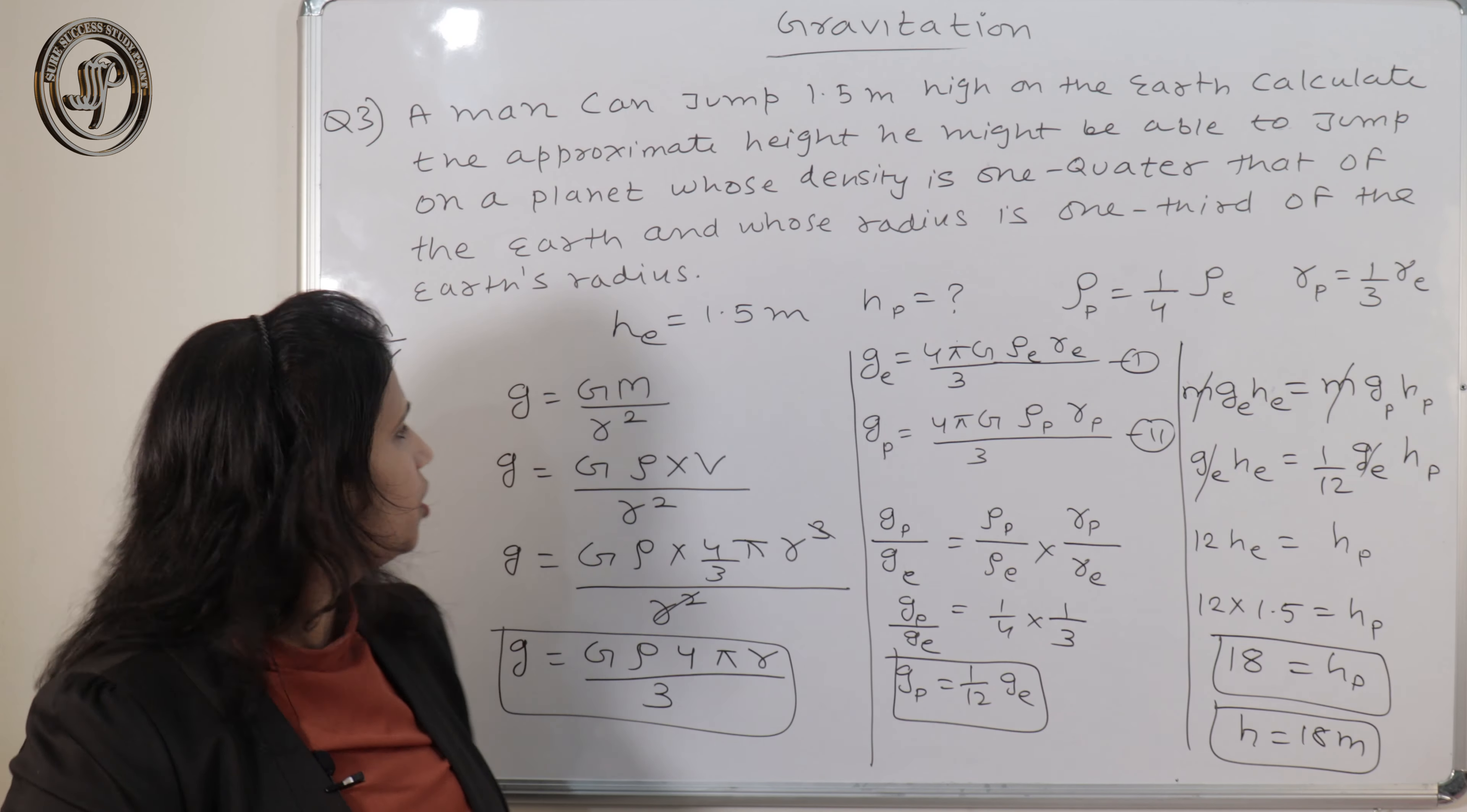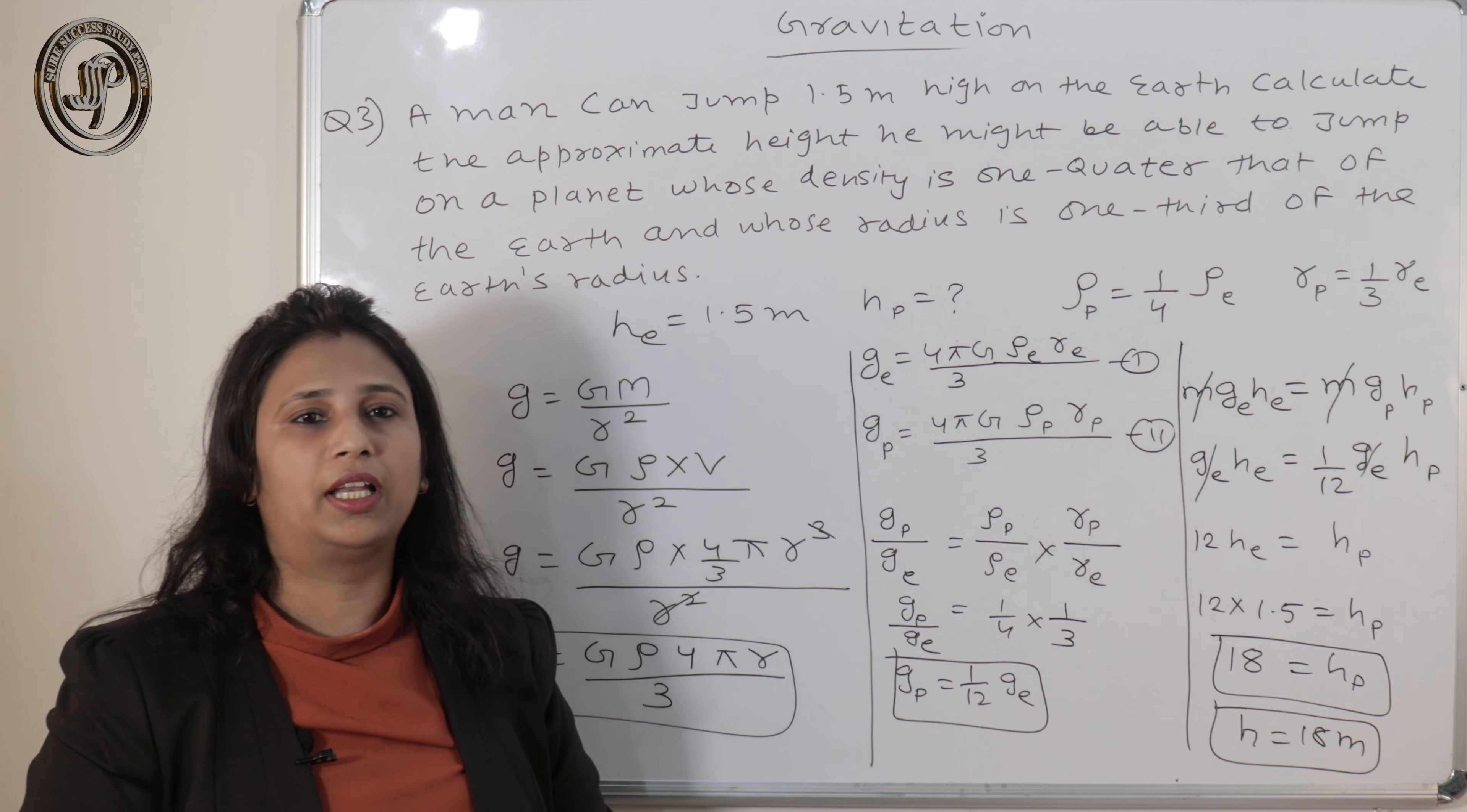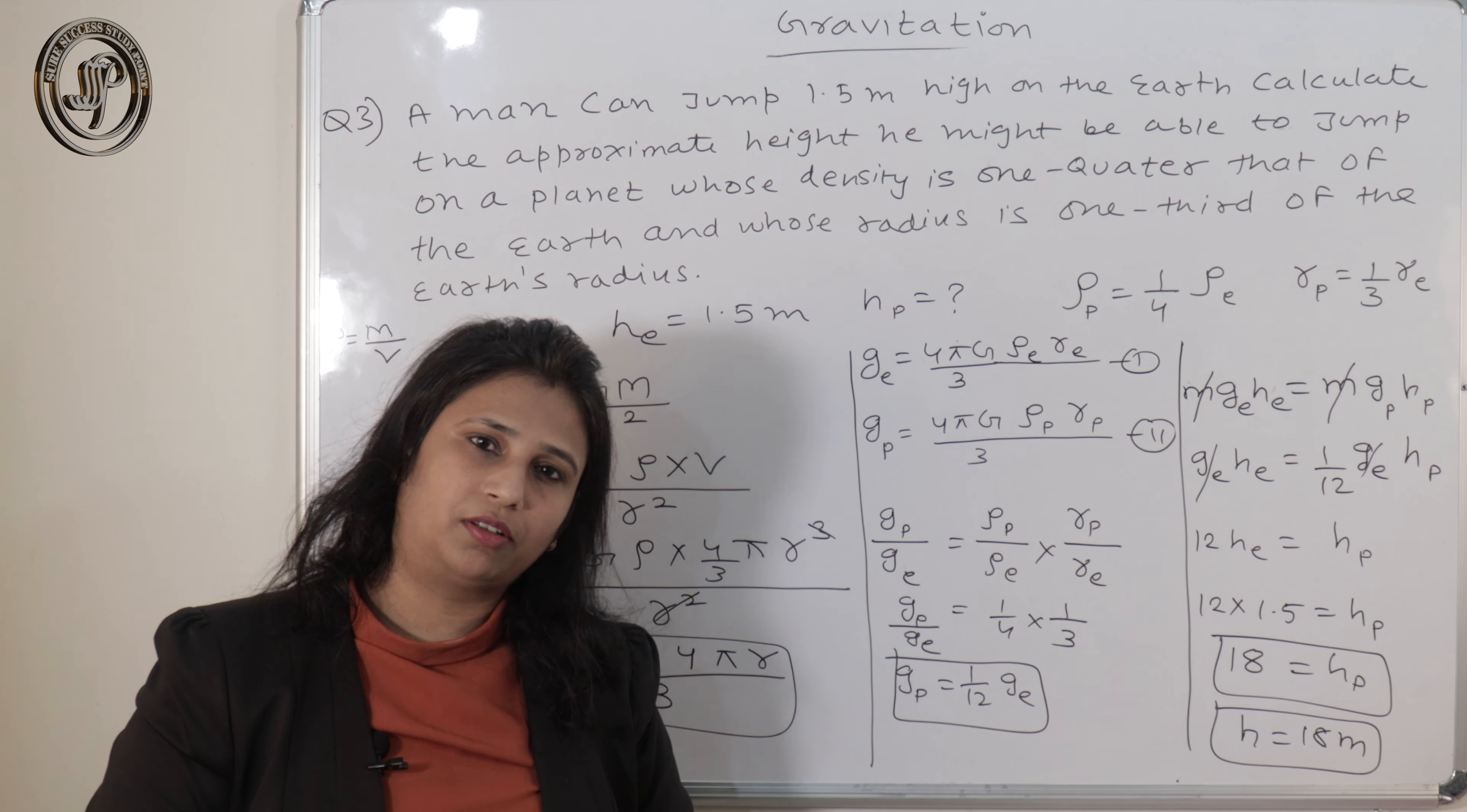So now we have done the relationship between the small g and capital G, that is acceleration due to gravity and universal gravitational constant. In our next episode of gravitation we will do the relation of variation of acceleration due to gravity with altitude. So if you have any query regarding this topic, please mention in the comment box.